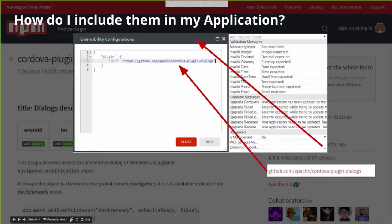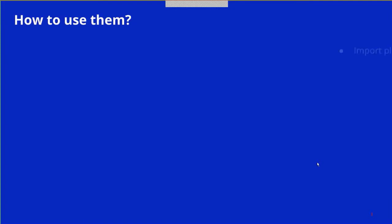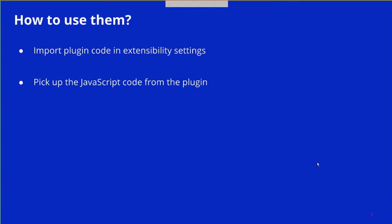To include the plugin in your application, there is an extensibility configuration on the module definitions where you set the URL on the plugin structure. A good plugin has good documentation — for example, local notification alert provides a definition of how to use the plugin in JavaScript. You just copy this code into OutSystems JavaScript nodes. Steps: import the plugin code in extensibility settings, pick up the JavaScript code, add JavaScript nodes, and use it.